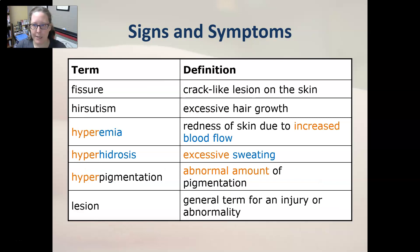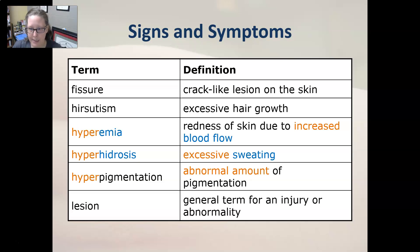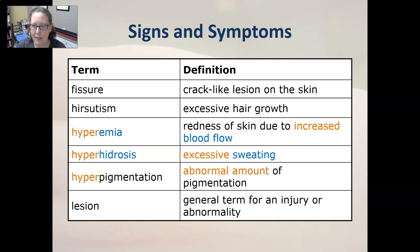A fissure is a crack-like lesion on the skin, usually in a skin area that's really dry. Hirsutism is excessive hair growth. Hyperemia is redness of the skin due to increased blood flow — 'emia' always refers to something related to the blood.